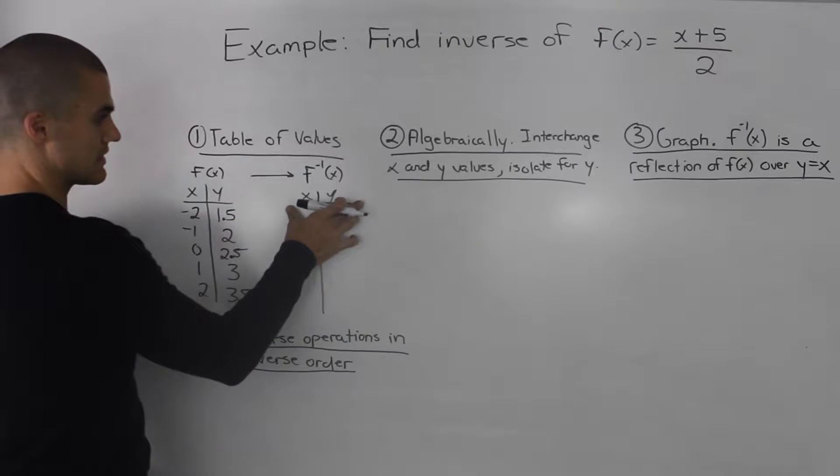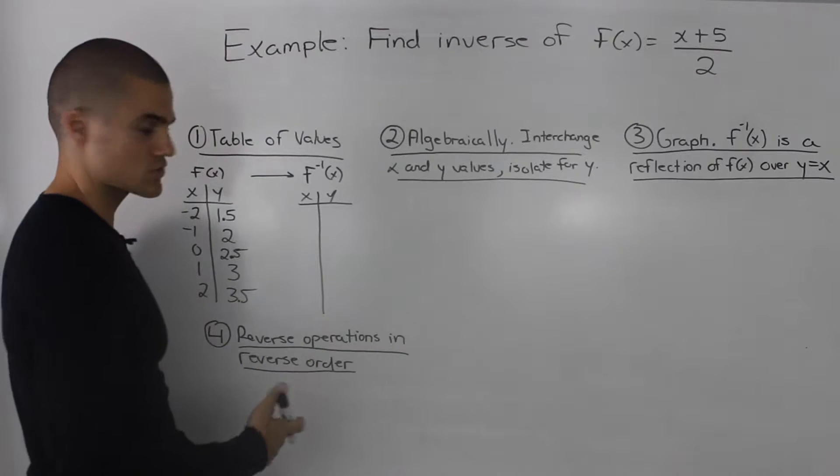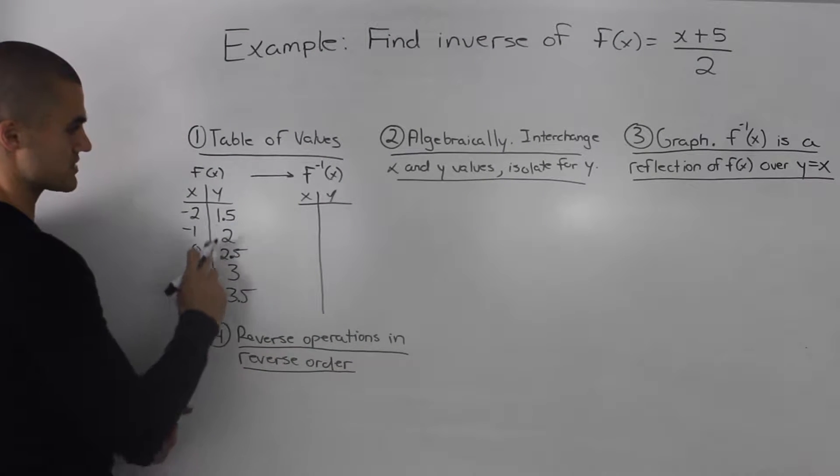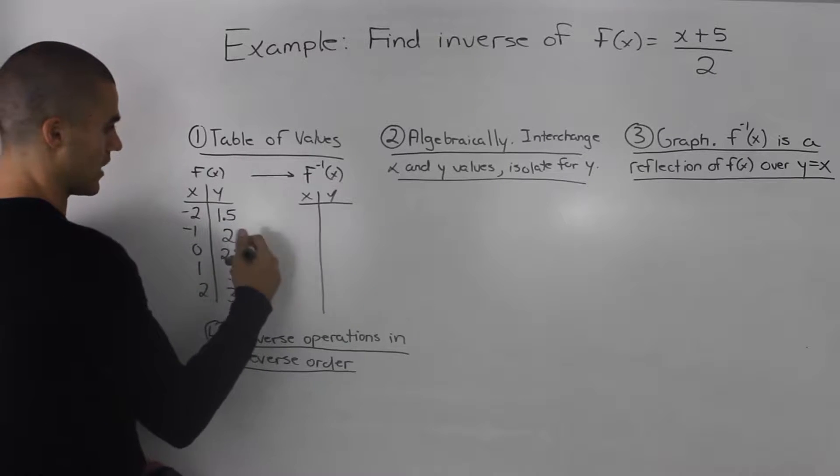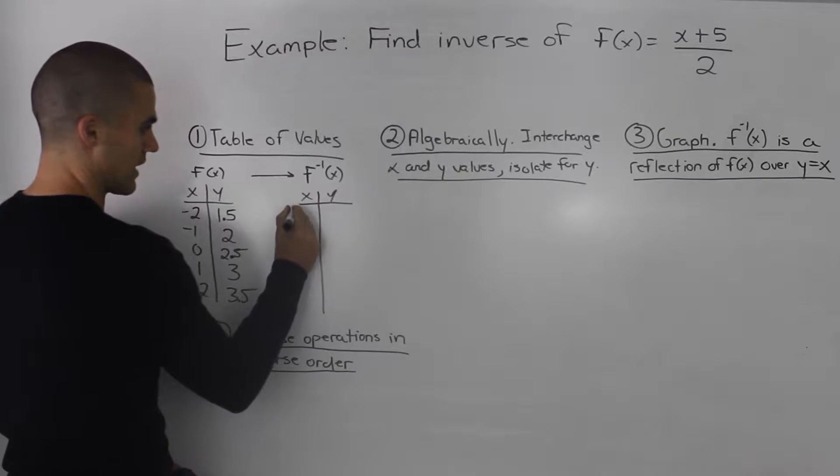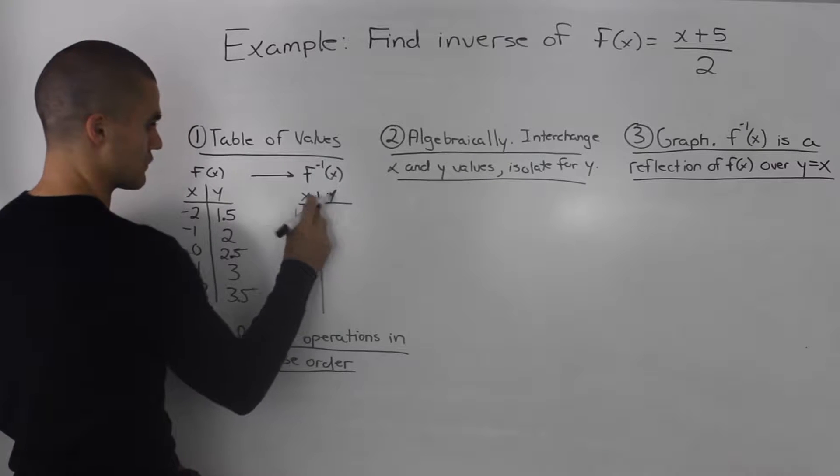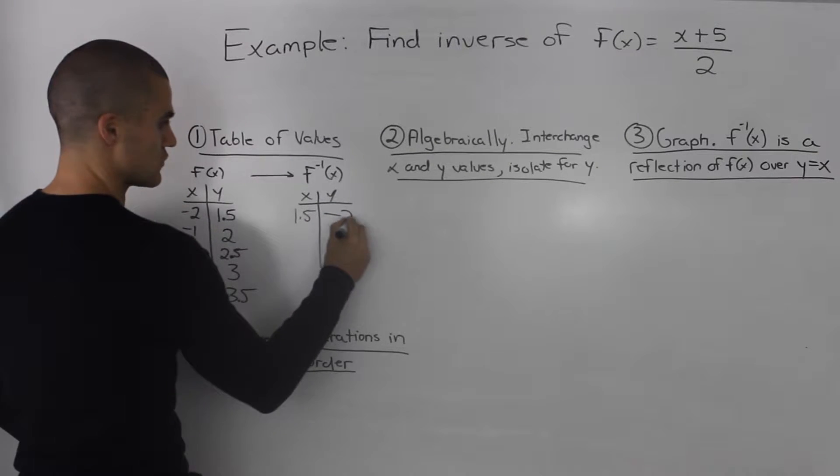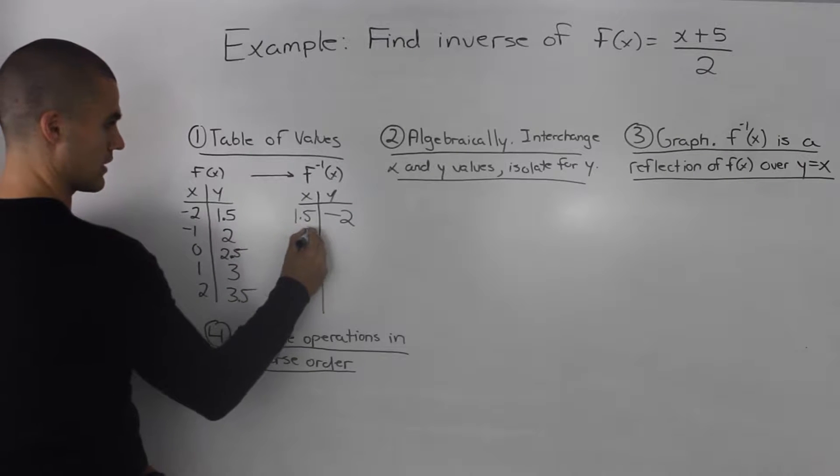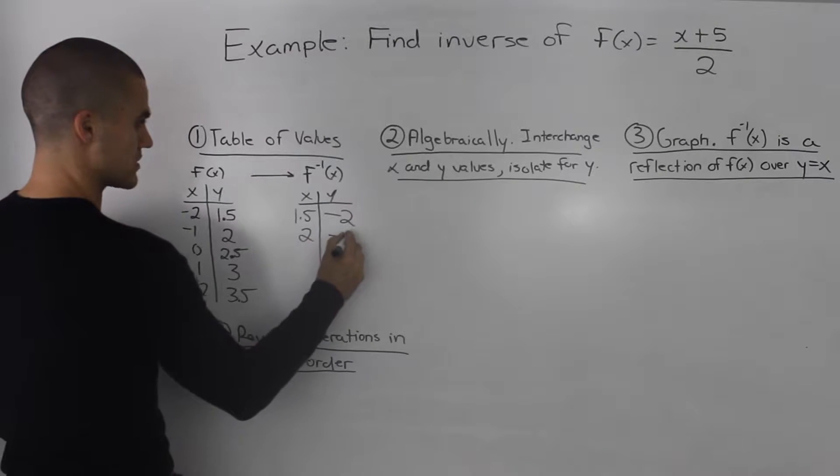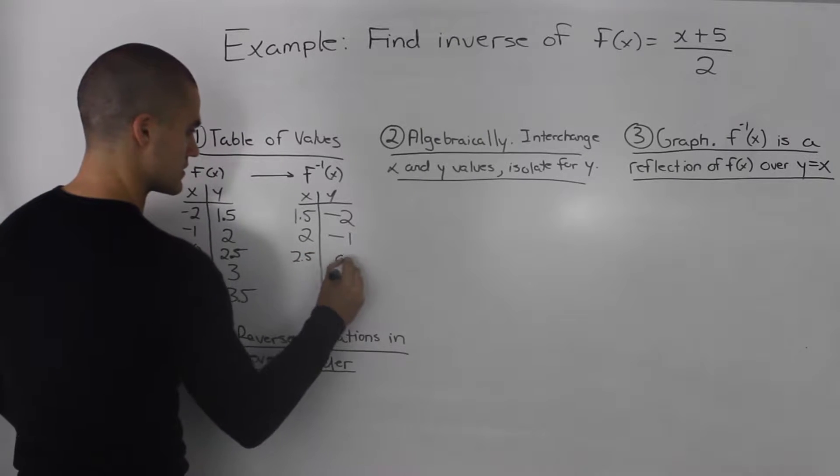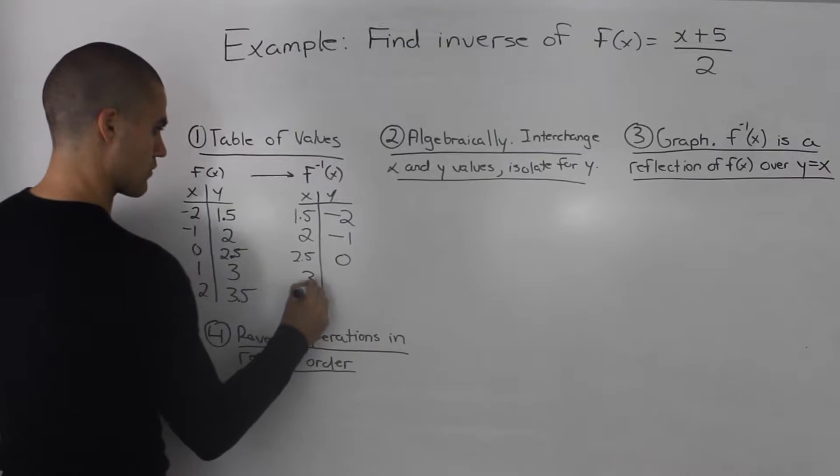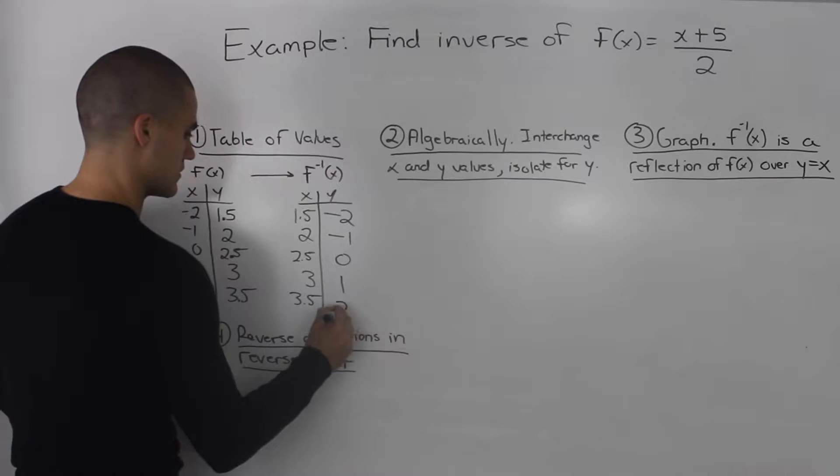And to get the table of values of the inverse, what do you do? Well, you just take each of these points and interchange them. So the x becomes a y and the y becomes an x. So here we'd have 1.5 for the x value and negative 2 for the y value. And same thing for the rest of the points, interchanging each of them. So 2.5 and 0, 3 and 1, and then 3.5 and 2.